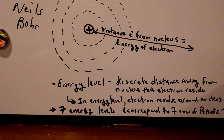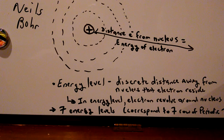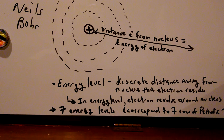But the big thing is the electron can't be at every distance away from the nucleus. They must reside in discrete distances away, which we call energy levels. In those energy levels, the electrons still revolve around the nucleus like planets around the sun. There are seven energy levels, which correspond to the seven rows on the periodic table.